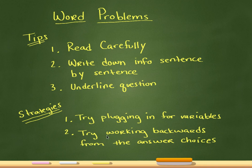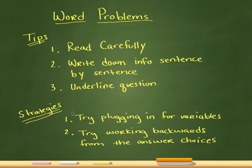Number two: try working backwards from your answer choices. If you're stuck and you have no idea where to go, remember that one of your answer choices has to be true. So why not assume that one of them is true and see if all the other information in your problem checks out — is it all consistent with one of these answer choices? These are pretty general because word problems can be anything, but these strategies can help as you try to solve and get through the problem.